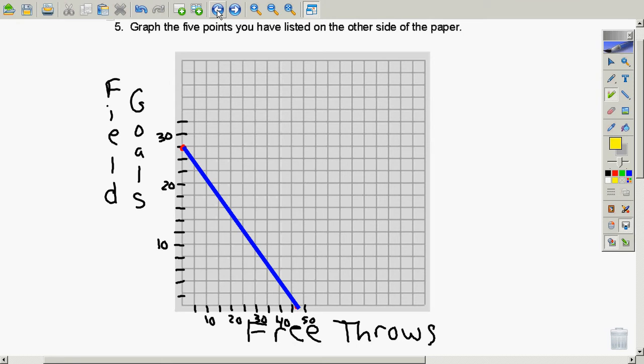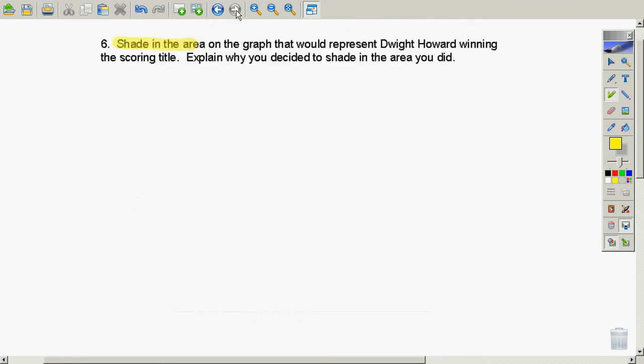And the question is asking you to shade the spots where Dwight Howard would win the scoring title. So that would mean he would score more than 46 points.